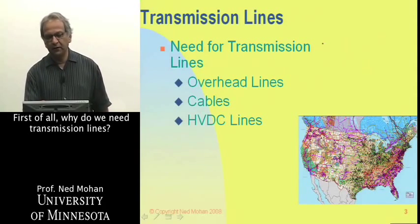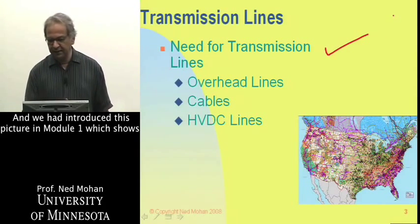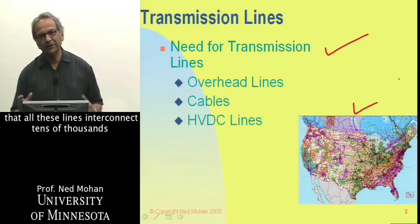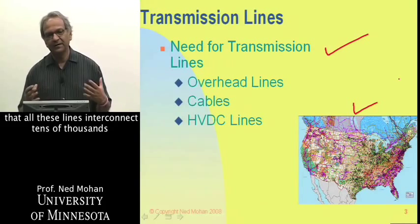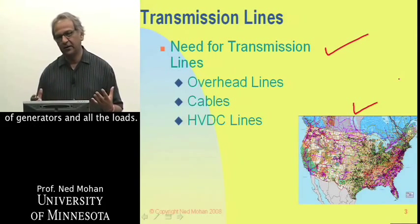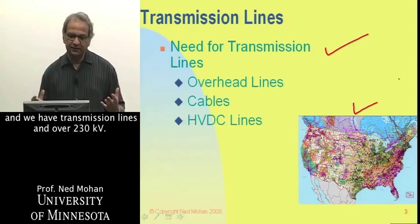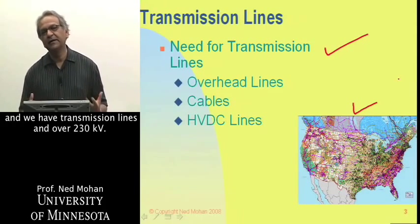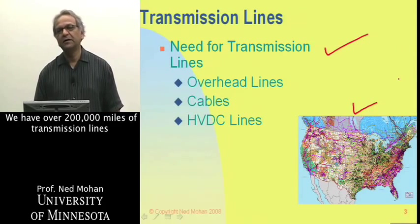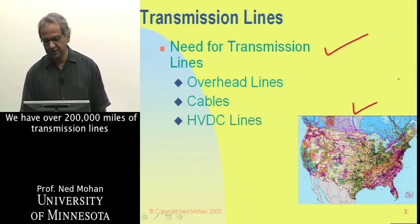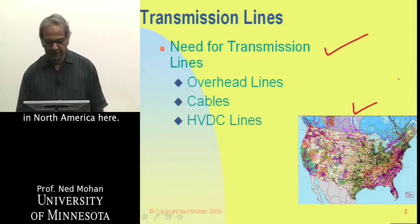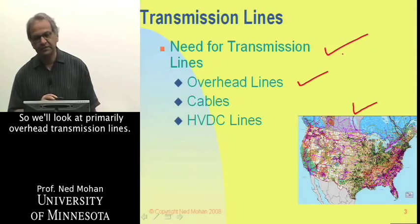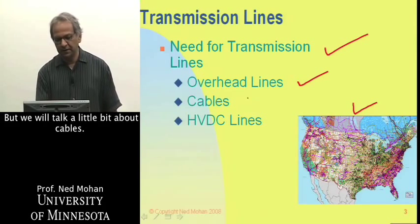Why do we need transmission lines? We introduced this picture in module one, which shows that these lines interconnect tens of thousands of generators and all the loads. We have distribution lines and transmission lines, and over 230 kV, we have over 200,000 miles of transmission lines in North America. We'll look primarily at overhead transmission lines, but we will also talk a little bit about cables.